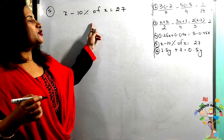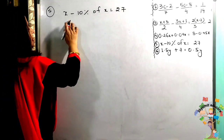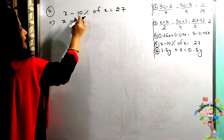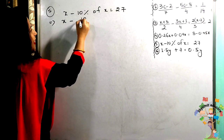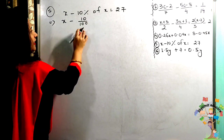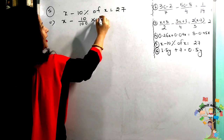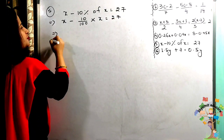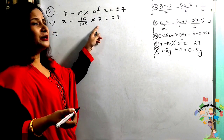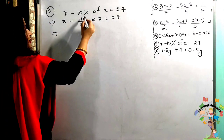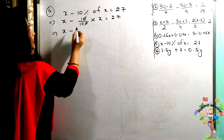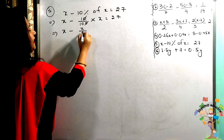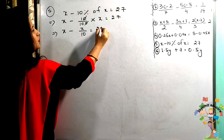Next question: x − 10% of x = 27. Let us solve carefully. 10% means 10/100, and 'of' means multiply, so x − (10/100) × x = 27. The zeros cancel, giving x − x/10 = 27.